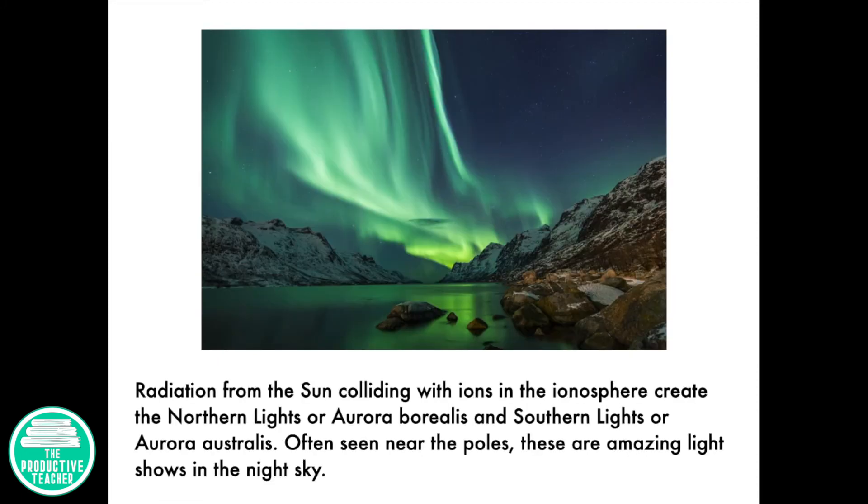Radiation from the sun colliding with ions in the ionosphere create the northern lights, or aurora borealis, and southern lights, or aurora australis. Often seen from the poles, these are amazing light shows in the night sky.